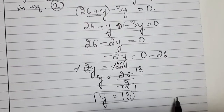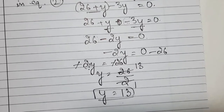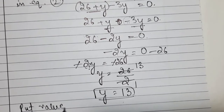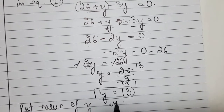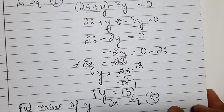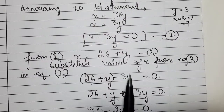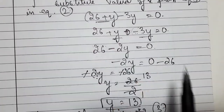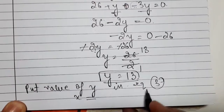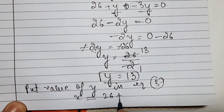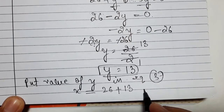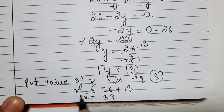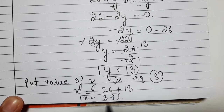We get minus 2y equals minus 26, giving us y equals 13. This is the value of y. In equation number 3, where we have x's value in terms of y, x equals 26 plus y, that is 26 plus 13, which equals 39. So our second number: x equals 39.